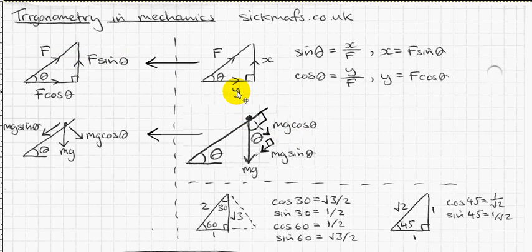Basically, the weight component perpendicular to the plane is always Mg cos theta, and going down the slope is always Mg sin theta. You have to remember that because it comes up so often, especially in the connected particles videos or equilibrium forces, anything to do with slopes.